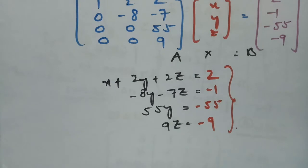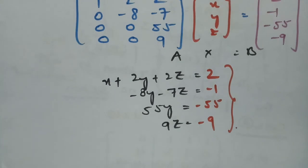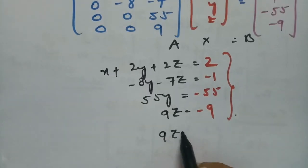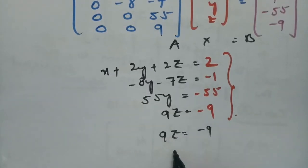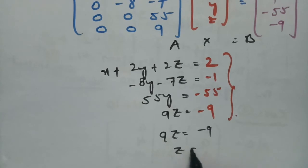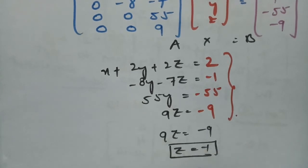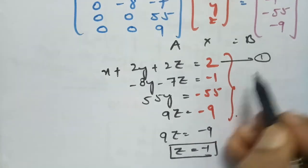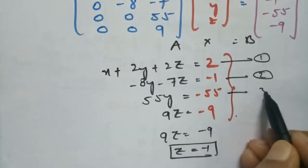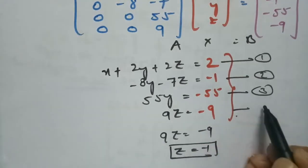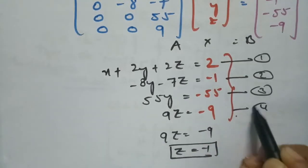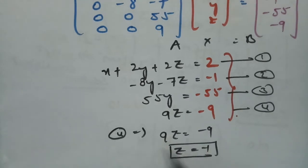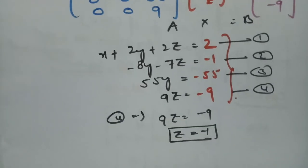Solving equation 4: 9z equals minus 9, so z equals minus 1. After getting the z value, I will label these as equations 1, 2, 3, and 4. Using equation 4, I got z equals minus 1.